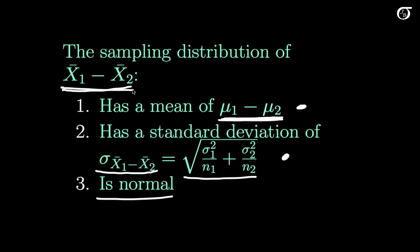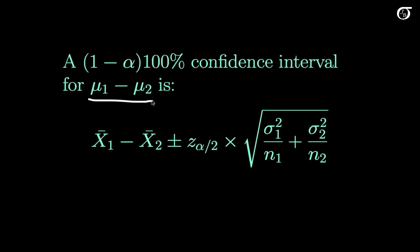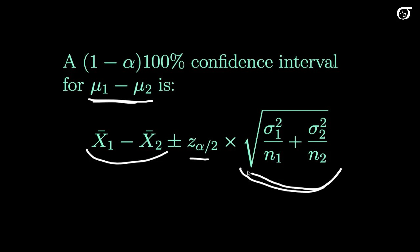We know that our estimator, x̄1 minus x̄2, is normally distributed given the normality assumption. We know it's an unbiased estimator of the quantity of interest, and we know its standard deviation — so we can carry out regular inference techniques. Our confidence interval for the difference in population means is set up similarly to one-sample problems: start with the difference in sample means, then add and subtract a z value times the standard deviation of the sampling distribution.